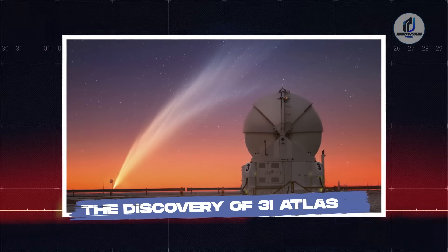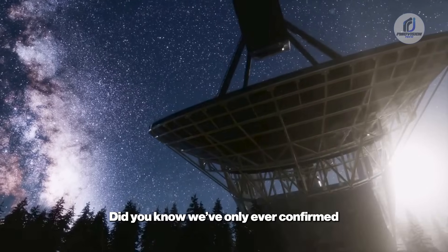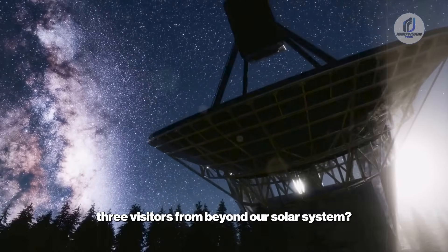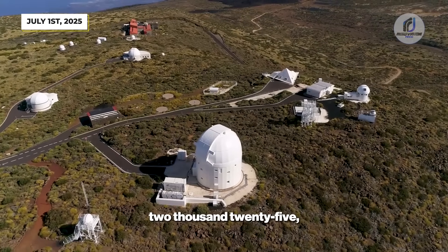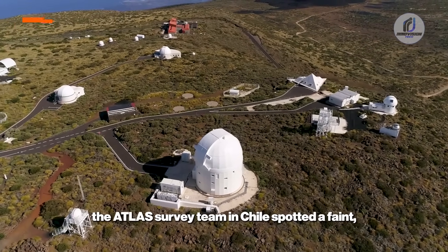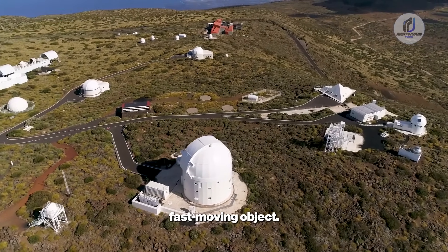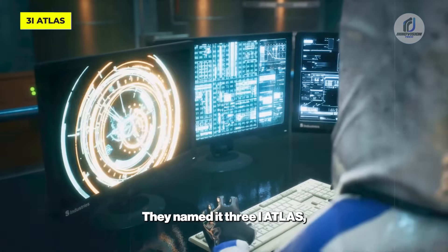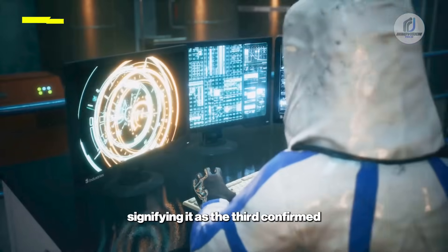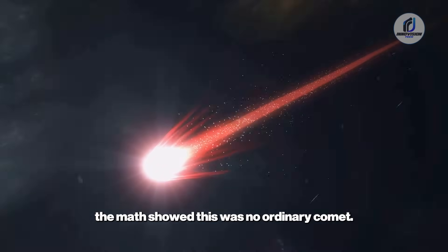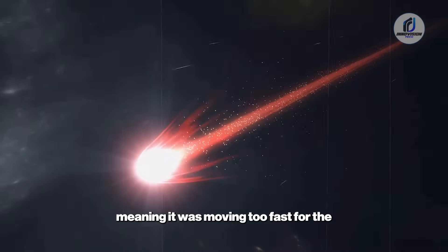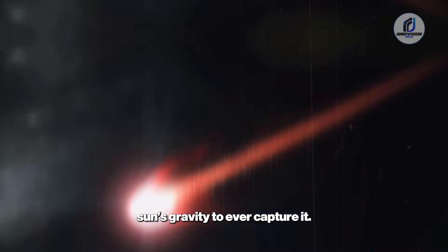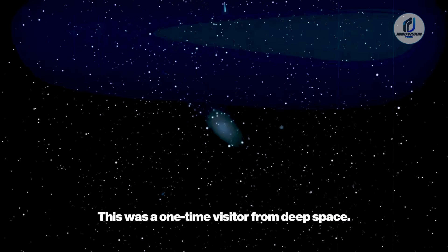The Discovery of 3I Atlas. Did you know we've only ever confirmed three visitors from beyond our solar system? The latest one just rewrote the rules. On July 1, 2025, the Atlas survey team in Chile spotted a faint, fast-moving object. They named it 3I Atlas, signifying it as the third confirmed interstellar object. Right away the math showed this was no ordinary comet. Its path wasn't just a long loop, it was hyperbolic, meaning it was moving too fast for the sun's gravity to ever capture it. This was a one-time visitor from deep space.